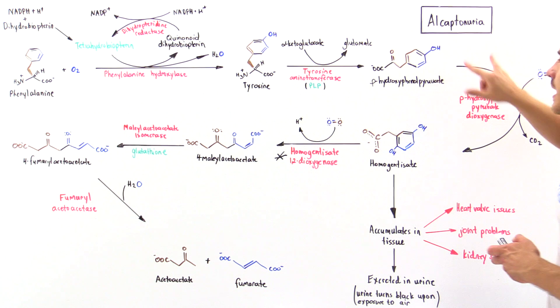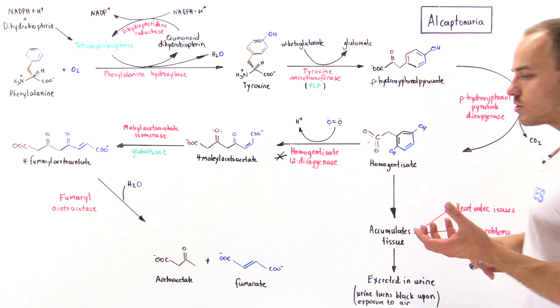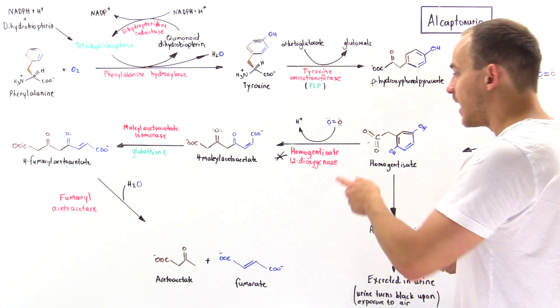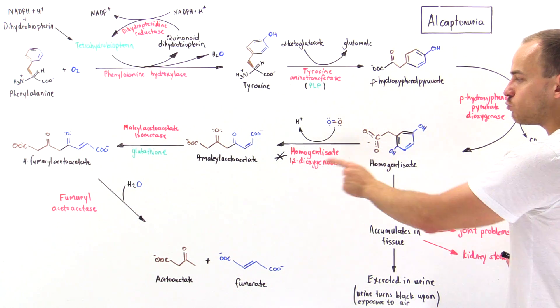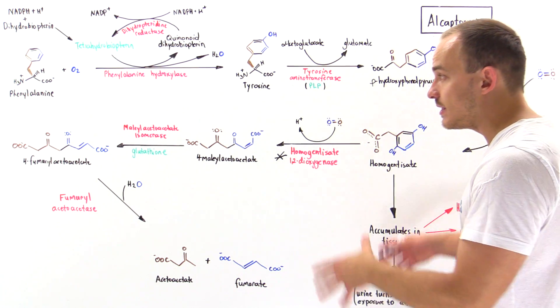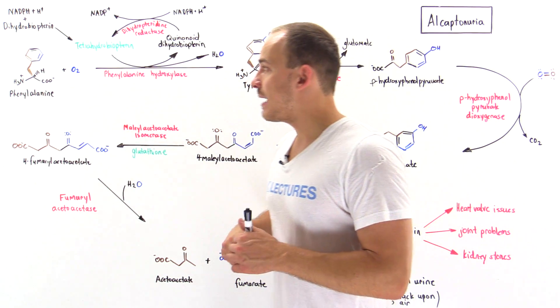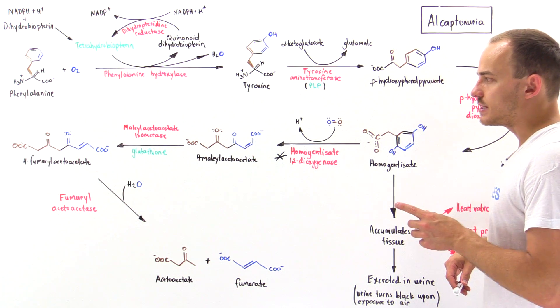To summarize, alcaptanuria is an autosomal recessive disease in which we have a defective enzyme, namely homogentisate 1,2-dioxygenase. This enzyme is found in the metabolic pathway of phenylalanine and tyrosine.